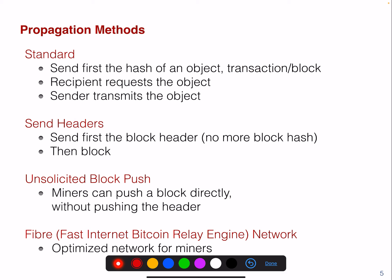In Bitcoin there are four propagation methods. The standard one is: you first send the hash of an object — the hash of a transaction or the block — so it's the identifier, a cryptographic hash. Then if the recipient doesn't know about this hash, it requests the object. So it's a so-called INV message, then a GET message, and then the transaction, for example. That's the standard three-way exchange when you receive a transaction or a block.